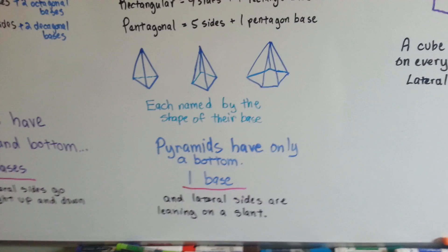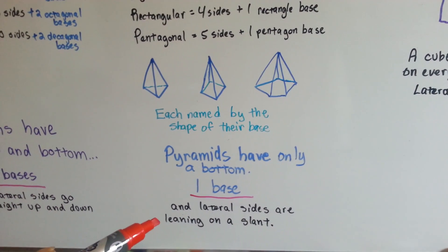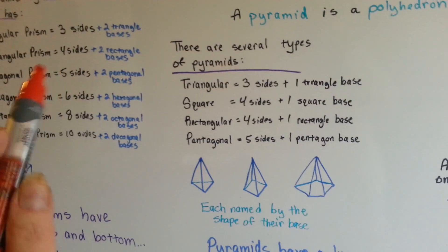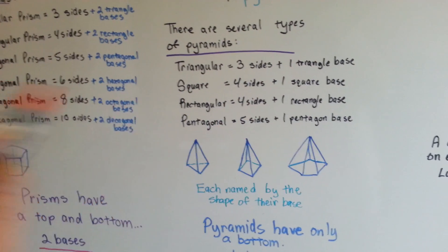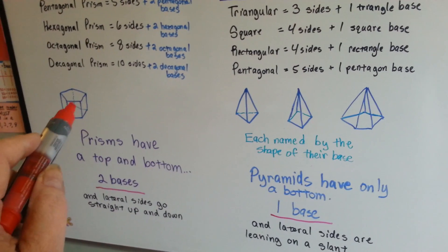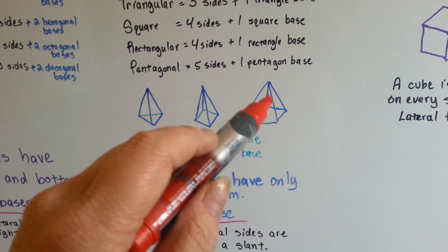So, pyramids have only one bottom. And the lateral sides are all leaning in on a slant. So, they're named just like the prism, but that's about as far as it goes. Because if you look, the prism has rectangles for sides, and the pyramids have triangles for sides. Every single side is shaped like a triangle.